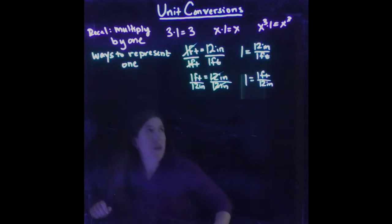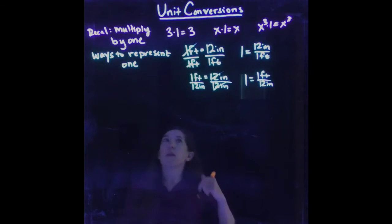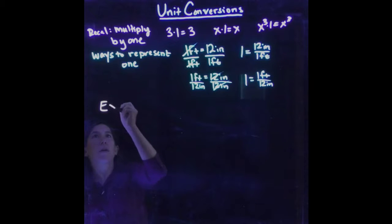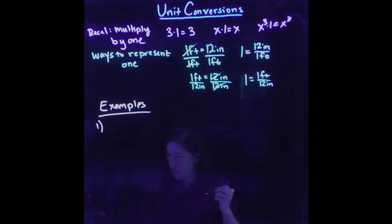So let's move on and actually do what we're here to do, which is some unit conversions. So examples. So 1. Let's try converting 90 miles per hour, some speed, to meters per second.